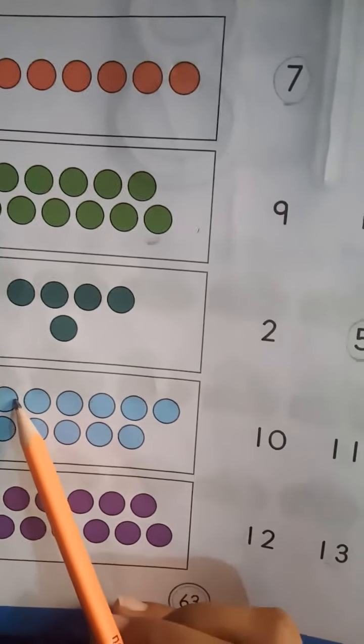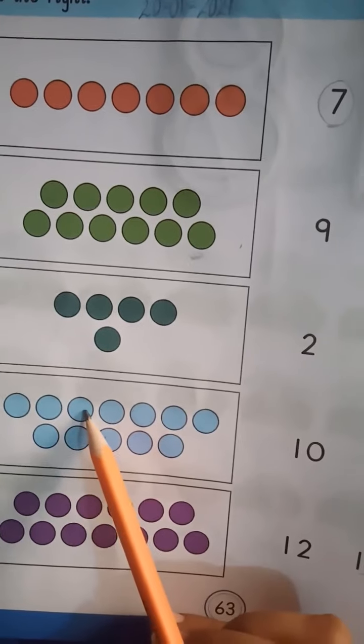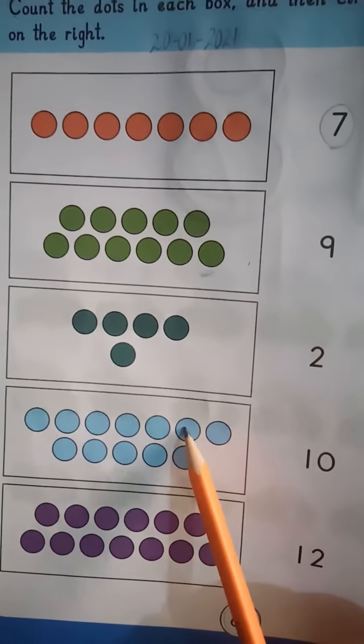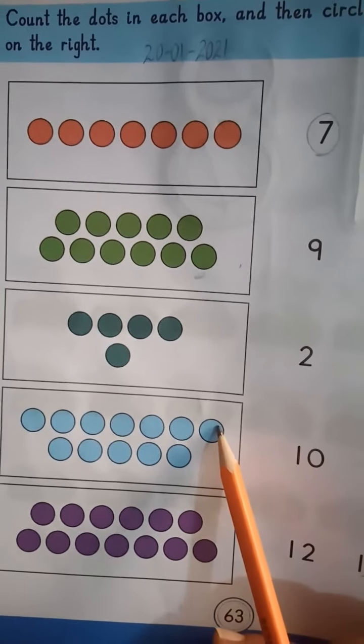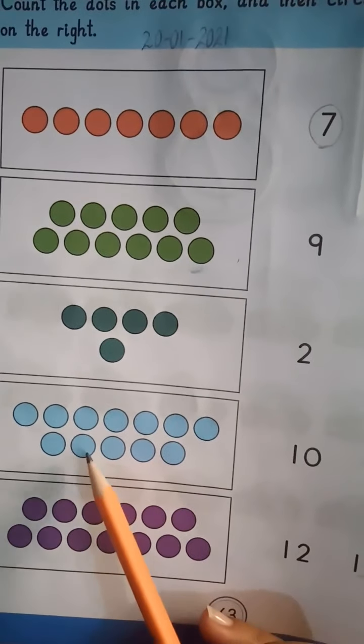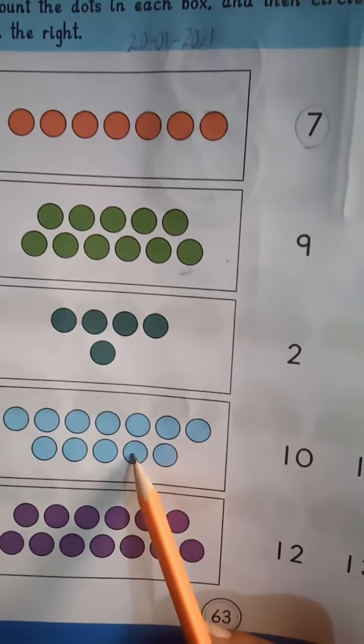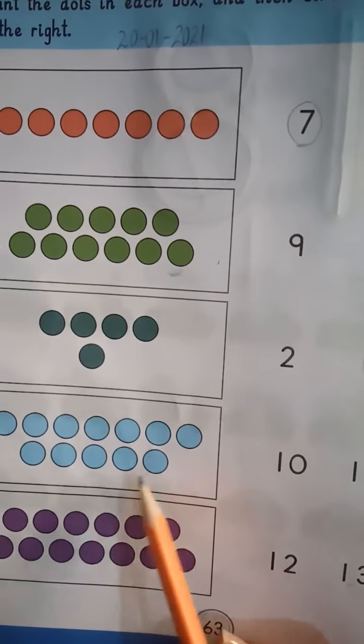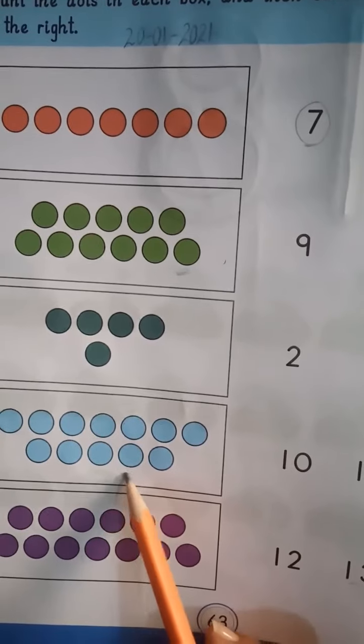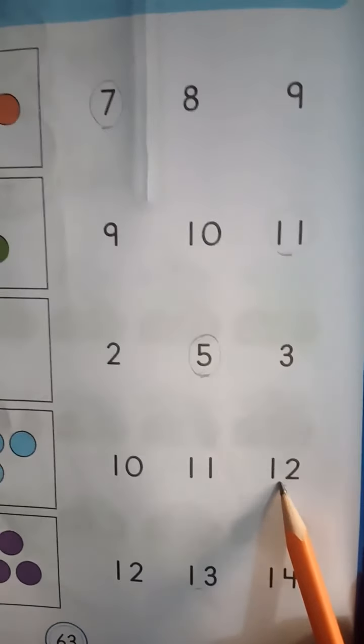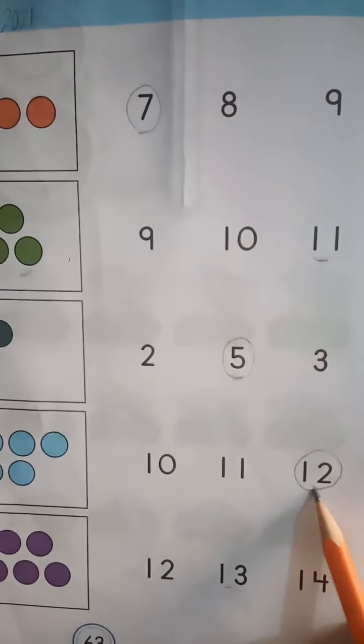Next, one, two, three, four, five, six, seven, eight, nine, ten, eleven, twelve. So this is how many dots there are - twelve. So what are we going to circle? Number 12.